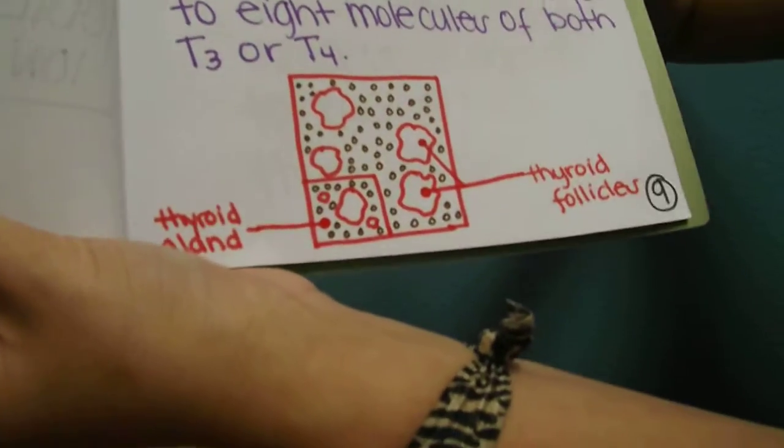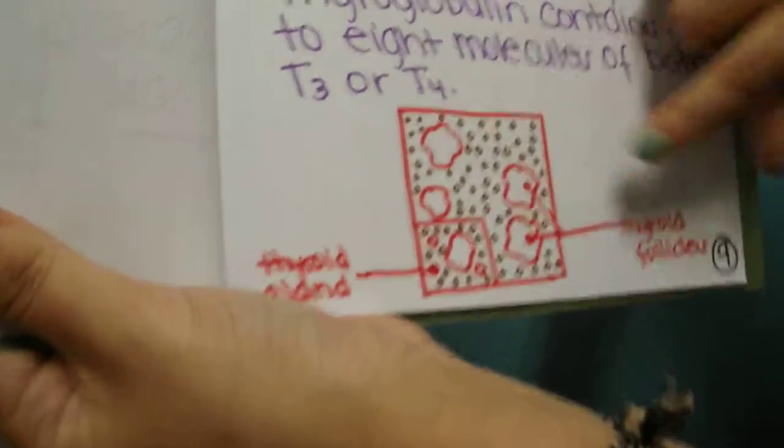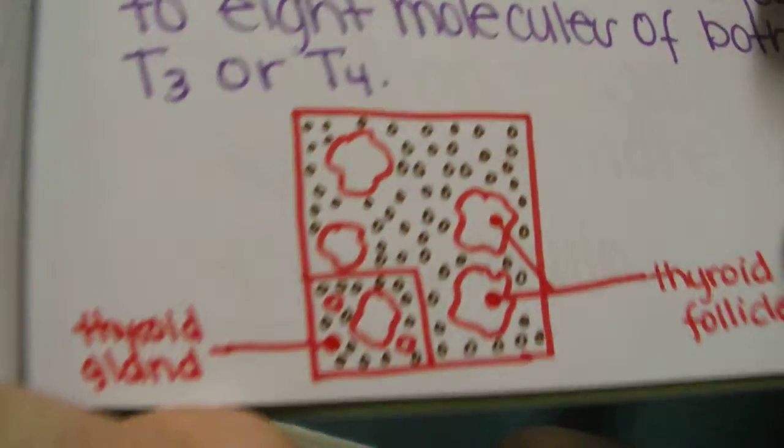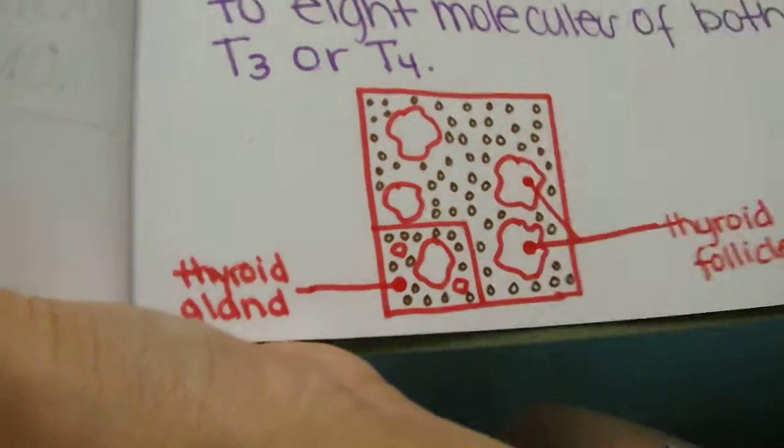So here I have an example of the thyroid gland and the thyroid follicles. These bigger things right here are the thyroid follicles. And then this, with all the little dots around it and the bigger in the middle, is the thyroid gland.